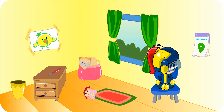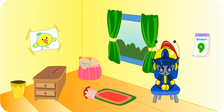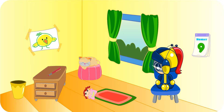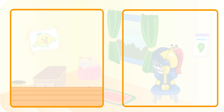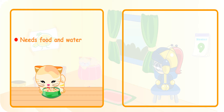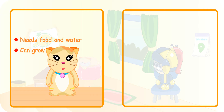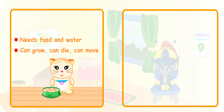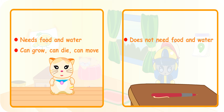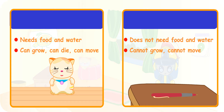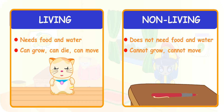If you look at the things around you, you'll notice that they are very different in many ways. Look at a kitten and the pen that you are using. A kitten needs food and water. It can grow and it can die. It can move. But a pen does not need food and water. It cannot grow and it cannot move. Things you see around you are either living or non-living.